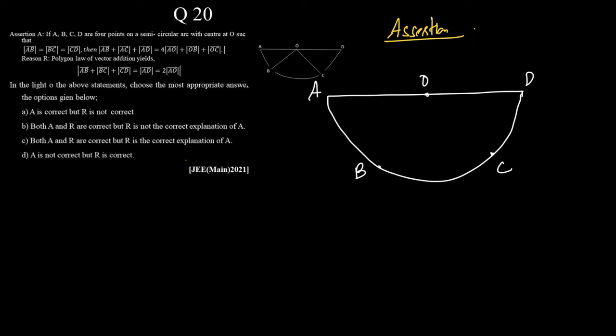See, vector AB means the starting point is A and the end position is vector B. AC means starting point is A and the end point is C. AD means starting point is A and the end point is D.